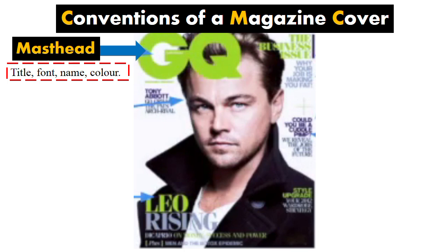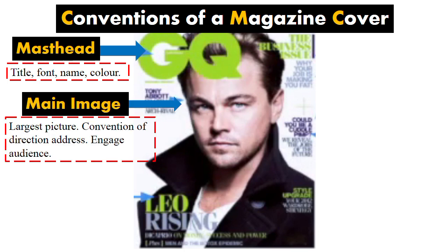A magazine front cover will always have a main image. This is a men's magazine, so they decided to put a man on the front to engage that target audience. The main image here is of an actor called Leonardo DiCaprio. A convention is often direct address, where the subject is looking directly at the audience, so that when this is on a shelf in a shop, it catches your eye because the model is looking directly at you.